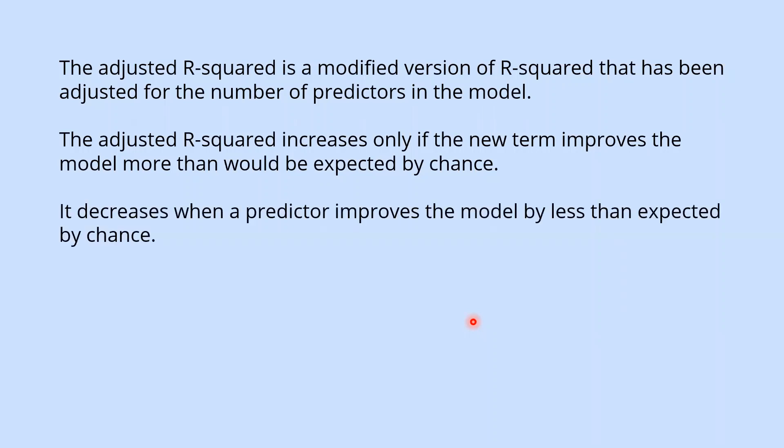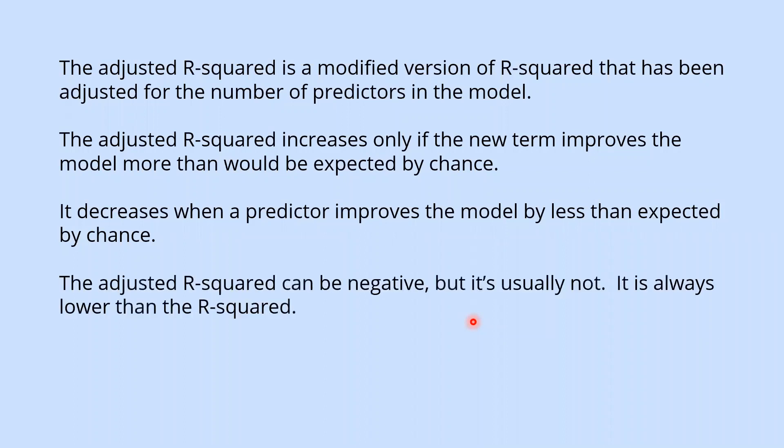It decreases when the predictor improves the model by less than expected by chance. The adjusted R2 can be negative but it's usually not. It is always lower than the R2.